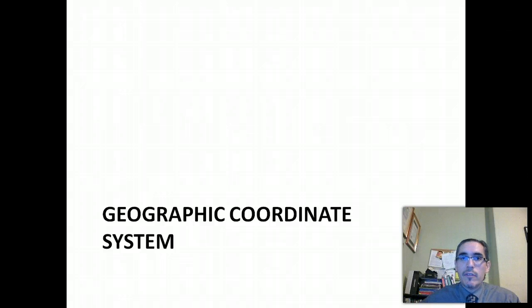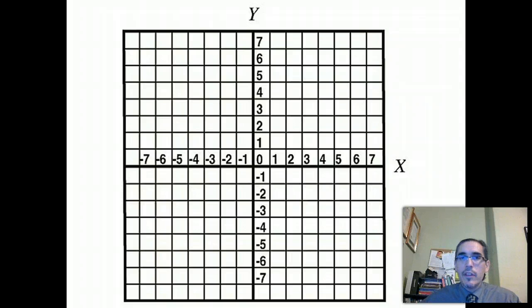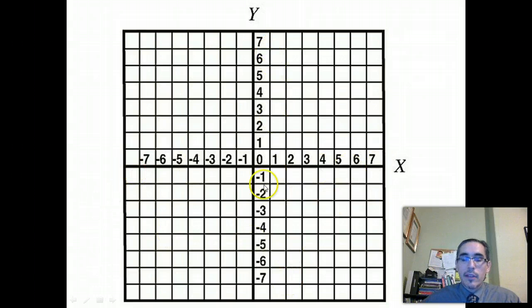And this should be a somewhat familiar concept. If you can think back to your high school geometry class, or maybe you're taking a math class right now that involves graphs, this should be a familiar sight to you. This is a Cartesian coordinate system. It's just a graph that has two axes on it. One is the x-axis and the other is the y-axis.